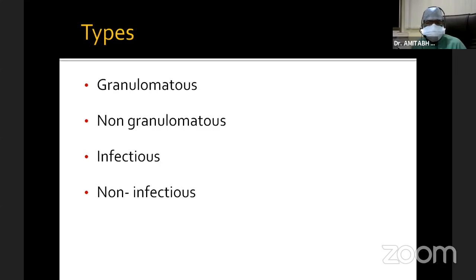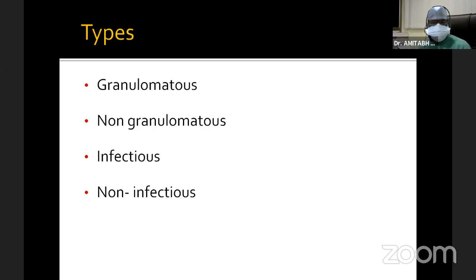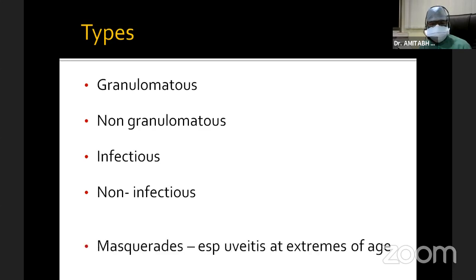When dealing with anterior uveitis, first of all we would try to figure out whether it's a uveitic entity or a non-uveitic entity, and if uveitic, whether anterior uveitis is granulomatous or non-granulomatous. It is imperative to try and figure out whether it's infectious or non-infectious. Uveitis can masquerade, and especially if you have uveitis at the extremes of age, that should raise a red flag.